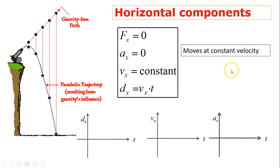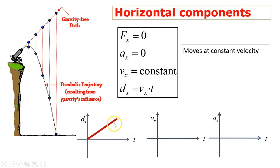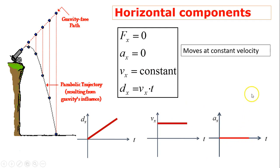In the horizontal direction, the projectile moves with constant horizontal velocity. On the d-t graph, slope is velocity; since slope is constant, the line is straight. On the v-t graph, vx is constant, so it is a horizontal line. On the a-t graph, ax is zero, so the graph sits on the zero line.